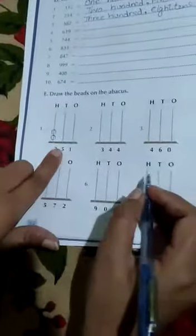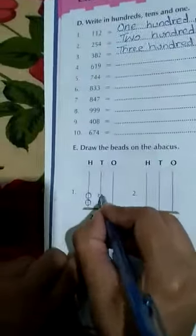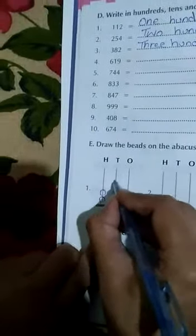Hundreds, tens and ones. This digit is 251. Two beads we will make in hundreds. How many are? Two. Tens, how many are? Five. Five beads - one, two, three, four, five. Then ones, how many are? One.